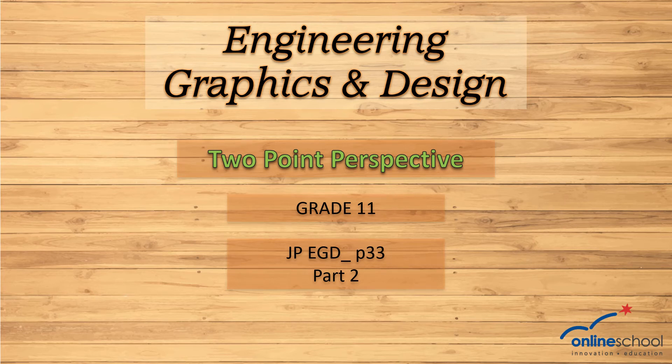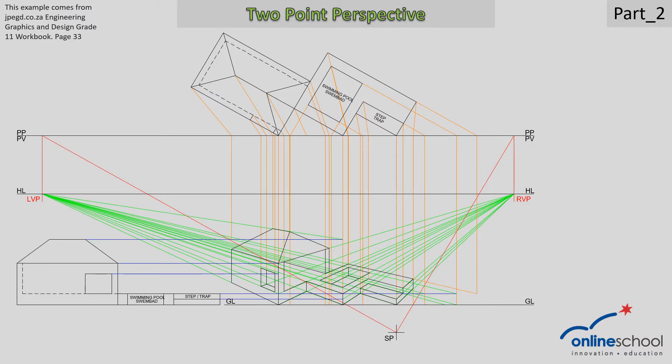Welcome to part two of the JPEGD workbook's page 33 on the two-point perspective. This is a quick reminder that we are at the main part which is number one, then the swimming pool which was number two, and then the last part where the steps is at number three. So we're going to mainly focus on this area which is part two.